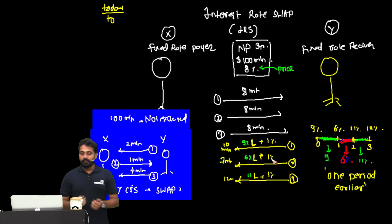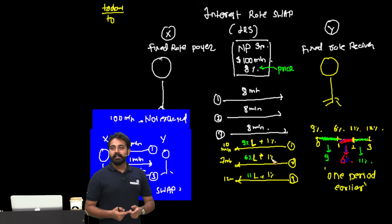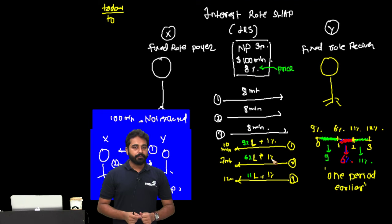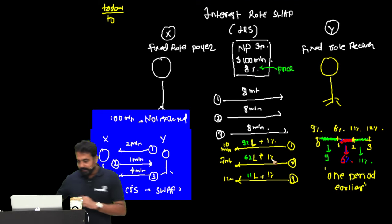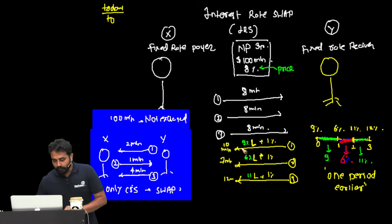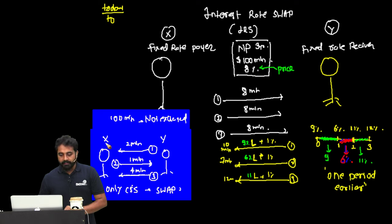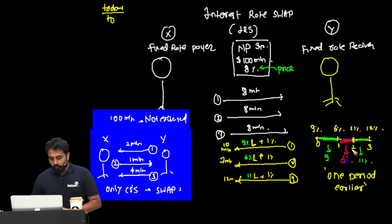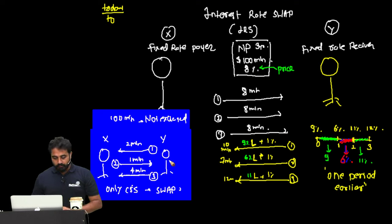These two parties came together, X and Y. They signed a swap agreement. X said every year I will pay you 8%. Y said every year I will pay you LIBOR plus 1%. In year 1, LIBOR turned out to be 9%, so X benefited because he received more money. In year 2, LIBOR went down, so Y benefited and received 1 million net. In year 3, LIBOR again moved in X's favor, so X received 4 million. This is how an interest rate swap typically works.